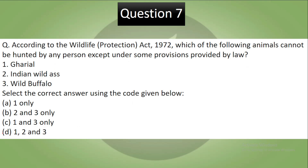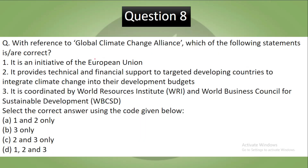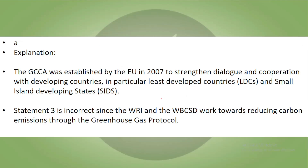Question 8: With reference to the Global Climate Change Alliance, which of the following statements is correct? Statement 1: It is an initiative of the European Union. Statement 2: It provides technical and financial support to target developing countries to integrate climate change into their development budgets. Statement 3: It is coordinated by the World Resources Institute and the World Business Council for Sustainable Development. Select the correct answer using the codes given below. Pause the video and try to answer. Your correct answer is A.